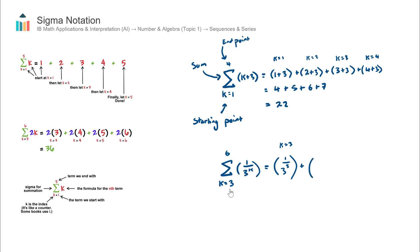Plus 1 over 3 to the power of 4, plus 1 over 3 to the power of 5, plus 1 over 3 to the power of 6.